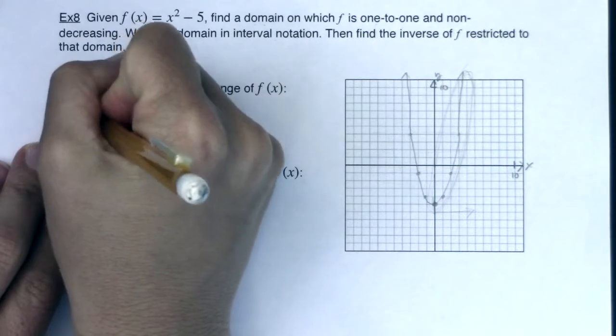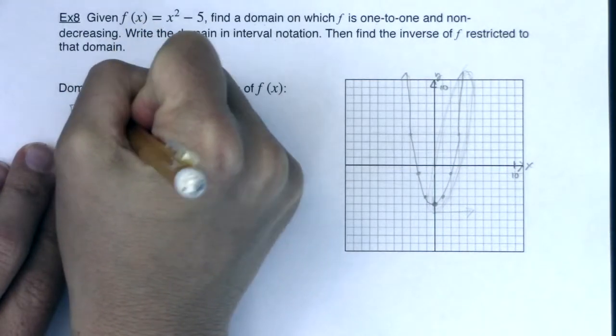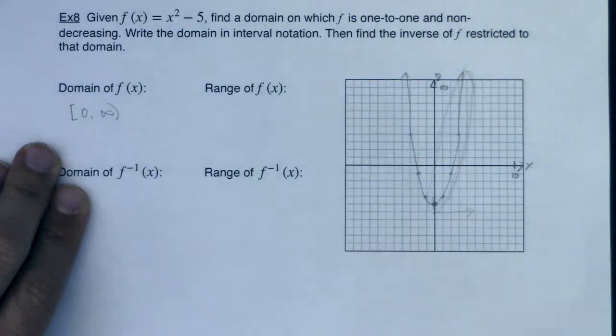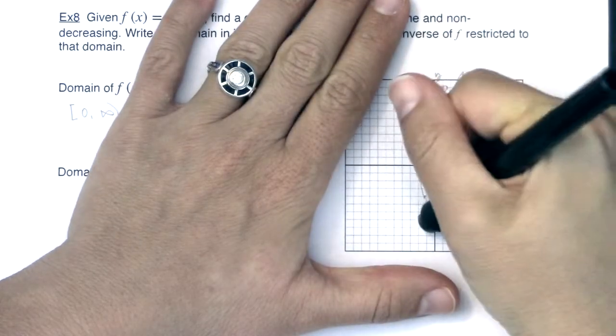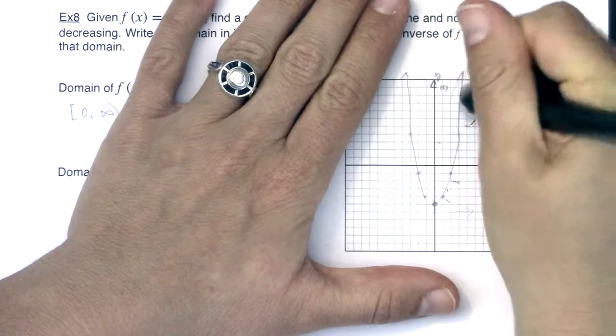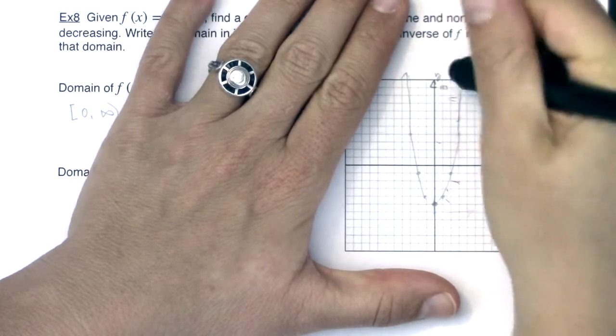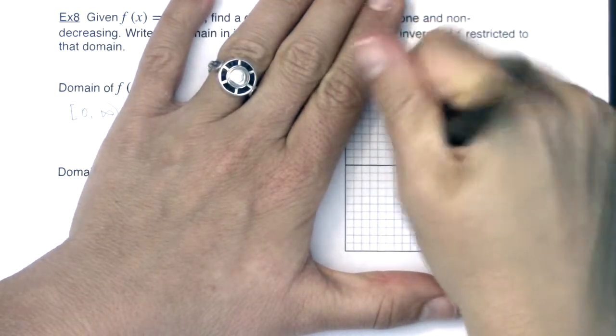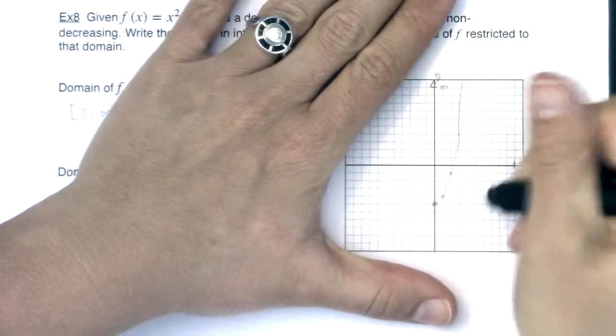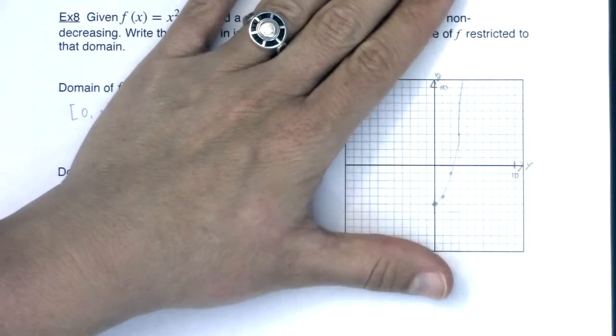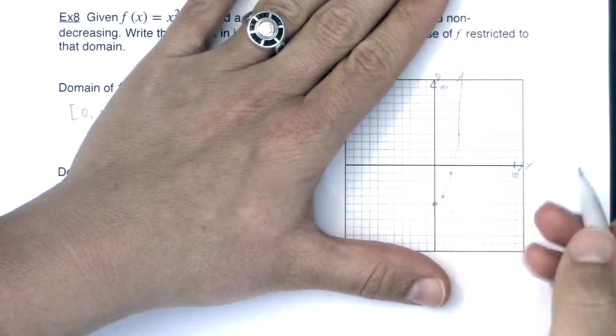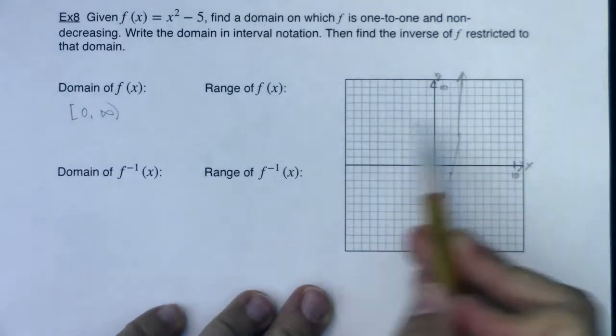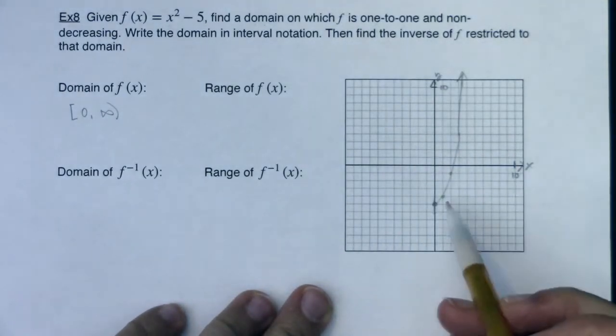The x values on which this parabola is non-decreasing are from x equaling 0 all the way to the right. So the domain I'm really interested in is [0, ∞). I'm going to redraw this and erase the left half of this graph because I don't want that piece anymore. If I only consider half of the parabola, this does now become one-to-one. I've passed the horizontal line test.